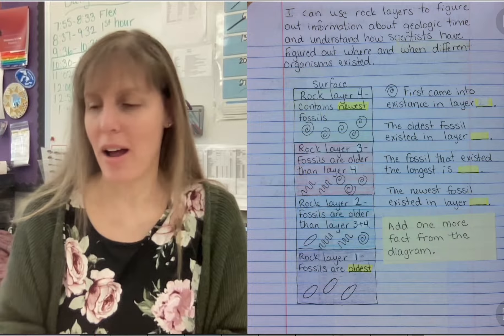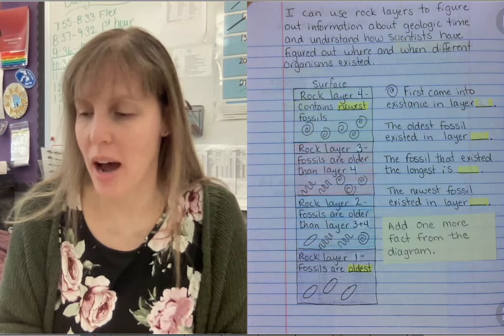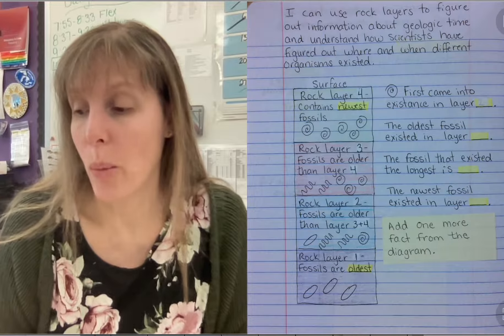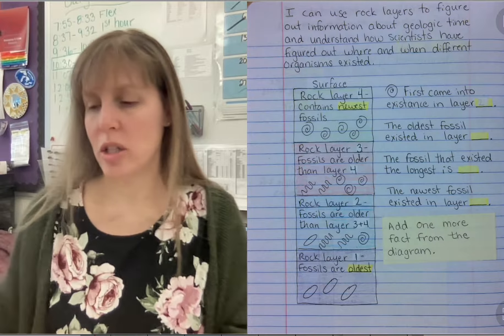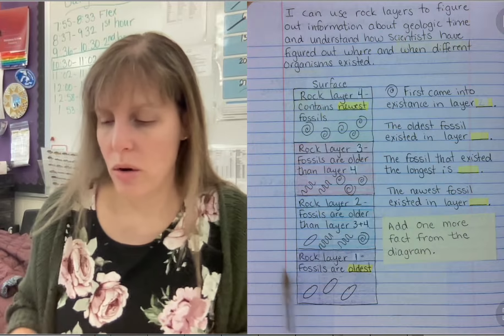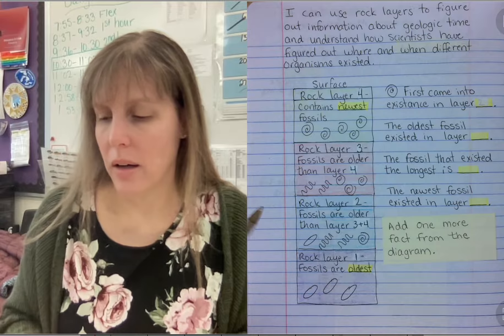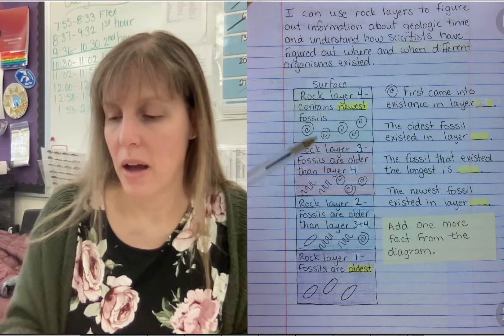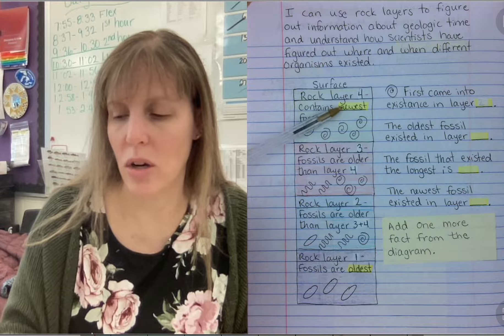Alright, do you remember that you can use rock layers to figure out information about geologic time and understand how scientists have figured out whether, where, and when different organisms existed? So we just put this together. We knew that rock layer 1 are the oldest fossils, rock layer 2 are older than 3 and 4, rock layer 3 are older than 4, and rock layer 4 contains the newest fossils.